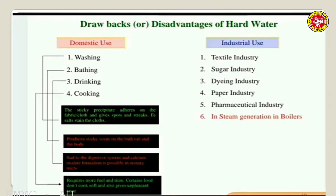For industrial use, without water you cannot run any industry, so industrial water should be very soft - it should not have any dissolved salts in it. In the textile industry, if you use hard water for washing or treating textiles, the hardness-producing salts will react with your dye, giving unwanted shades and spots on the textiles.